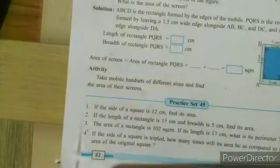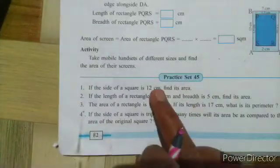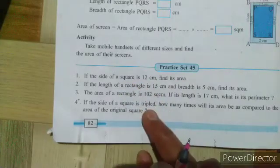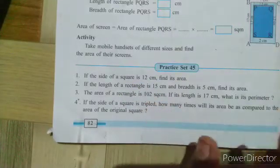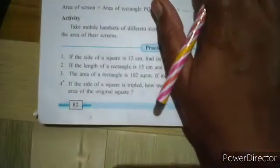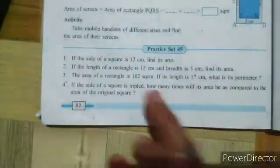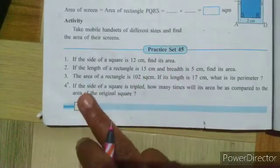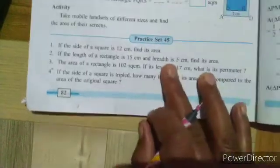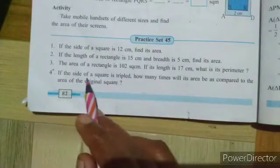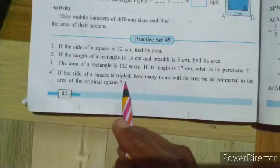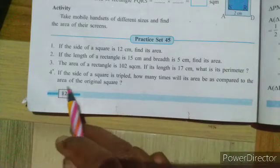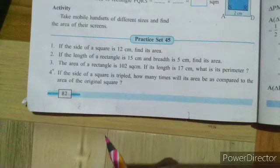Now let's see one more example from practice set. If the side of a square is tripled, how many times will its area be as compared to the area of the original square?